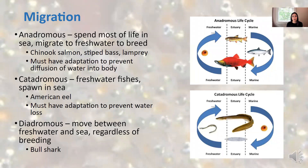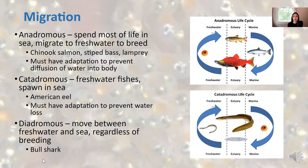First, migration. There are different types of migration seen in different species of fish. The first type, anadromous or anadromy, is when fish spend most of their life in the sea and they migrate to freshwater to breed. Examples of anadromous fish are chinook salmon, striped bass, and lamprey.